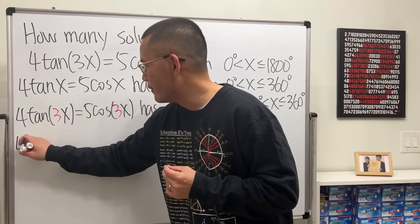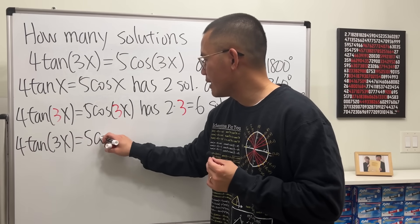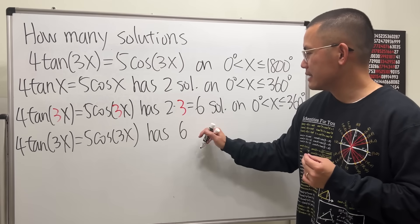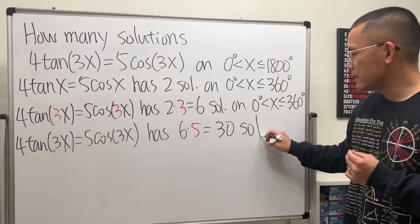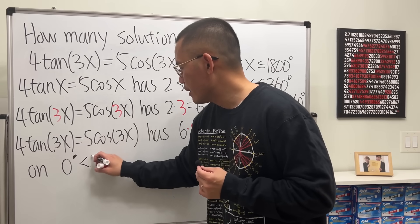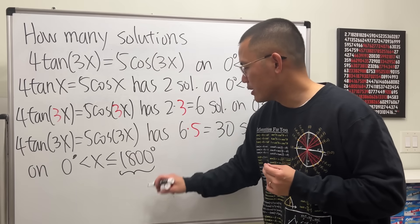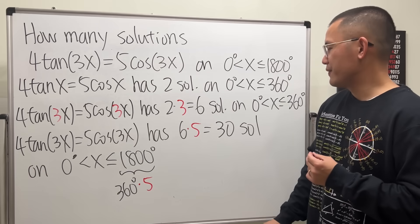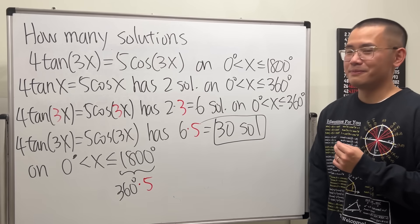So finally, I'll just say 4 tangent of 3x equals 5 cosine of 3x. This right here has 6 times 5, which is 30 solutions on the interval 0 and 1,800 degrees. And again, because this right here is 360 degrees times 5. So the answer to this is 30 solutions. That's it.